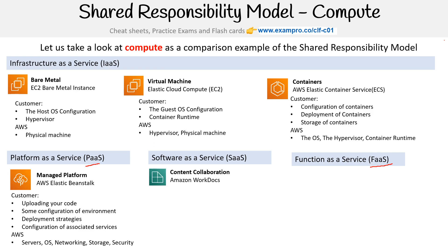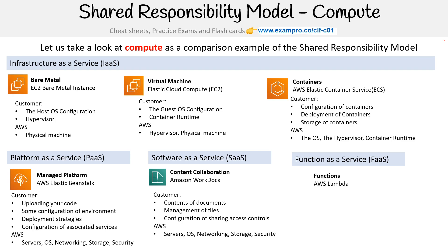Then we're looking at software as a service. On AWS, this is going to be something like Amazon WorkDocs, which is a competitor to Microsoft SharePoint — it's for content collaboration. As the customer, you're responsible for the contents of the documents, management of the files, and configuration of sharing and access controls. AWS is responsible for the servers, the OS, networking, the storage, the security, and everything else. So if you use a document and type stuff in it and say where to save it, that's what you're responsible for.